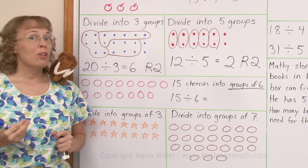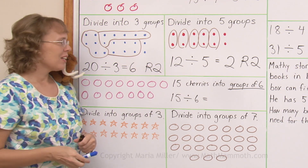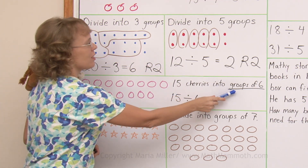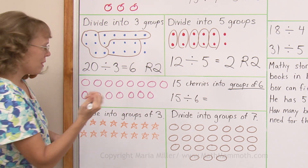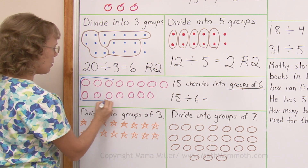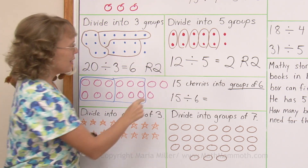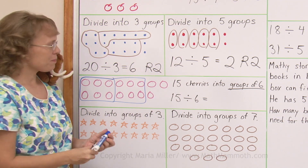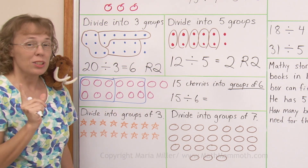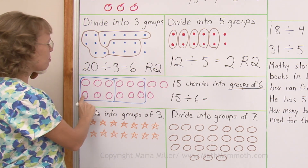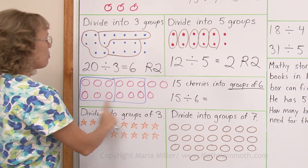Now in this problem we are no longer looking at sharing divisions — no longer sharing equally between so many people. Instead we are going to make groups of a certain size: groups of six this time. In the drawing it's pretty easy — I'm just counting six. Here's one group of six, another group of six, and then I can't make any more groups of six. These three are the remainder, the leftovers. And this time the answer is how many groups: two groups. Notice — the answer is not how many in each group, because I was told how many in each group — groups of six. The answer is how many groups: two.